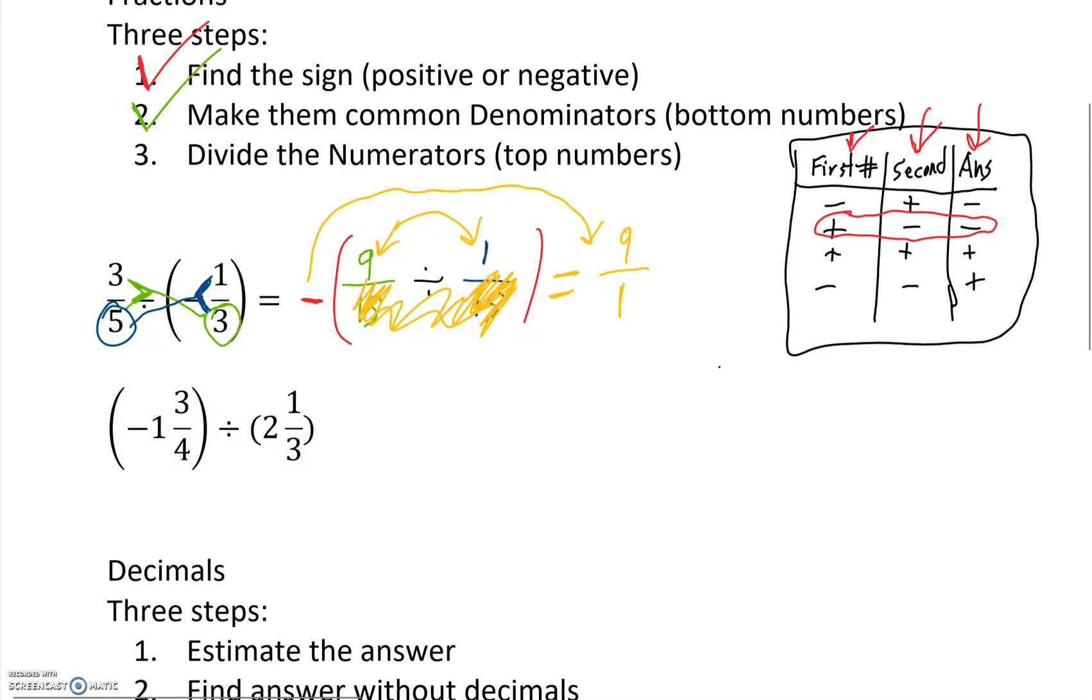But we can't forget, if we had a positive or negative, we can't forget to put that there. Now, negative 9 over 1, in this case it simplifies to negative 9. All right, and that is our answer. So either one of those two would be our answer. Awesome. We got that one.